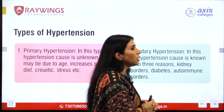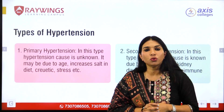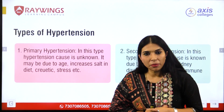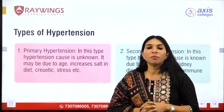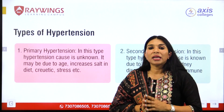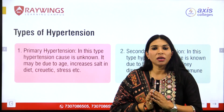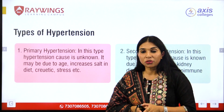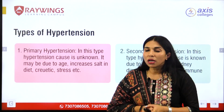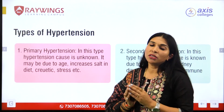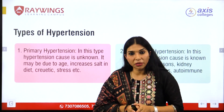There are basically two types of hypertension. One is primary hypertension and the next is secondary hypertension. Almost 90% of the population suffers from primary hypertension.